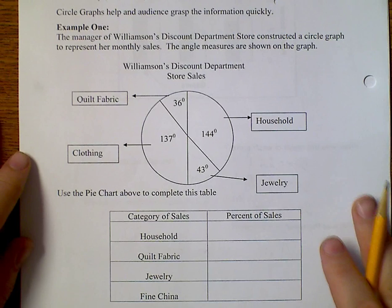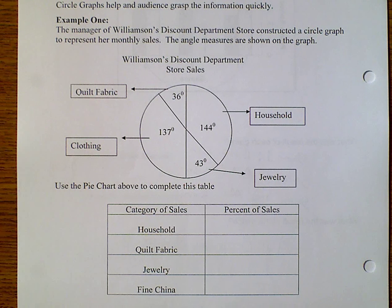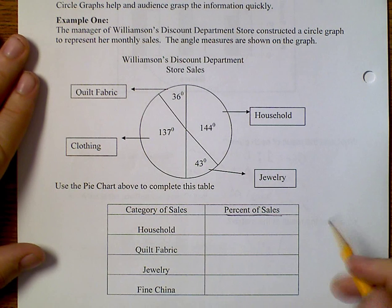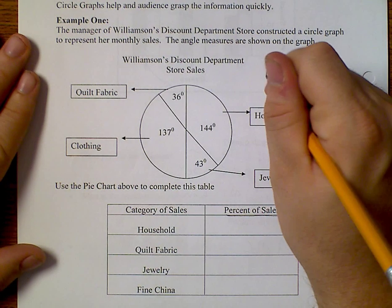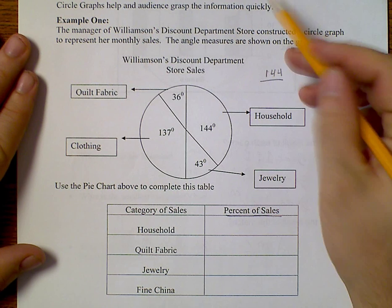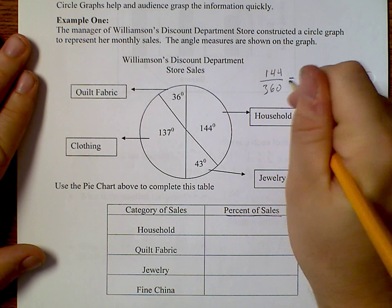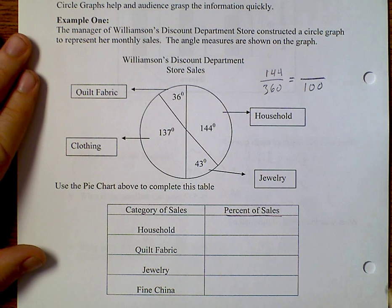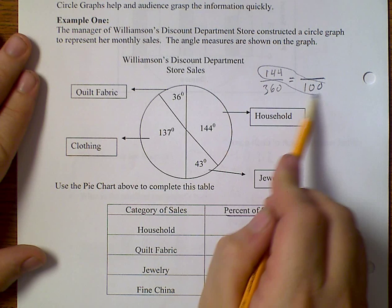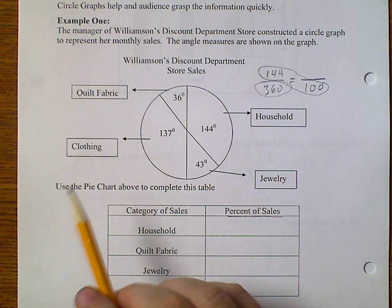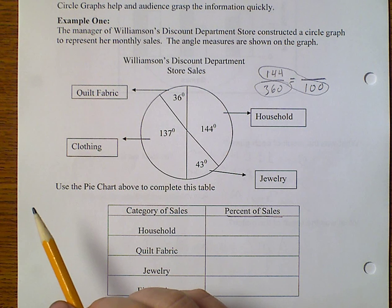So here we have example number one. We've got Williamson's Discount Department Store. And they have decided, they've already figured out the angles for their pie chart on each section. And we want to know what the percents are. So let's go ahead and start with household. I know that this is 144 over 360. That's going to equal something over 100. And then it's just cross multiply and divide. So 144 times 100 divided by 360 gives us 40.